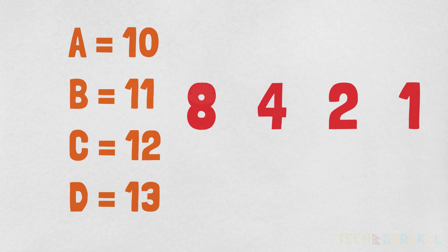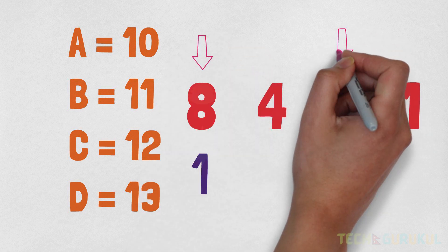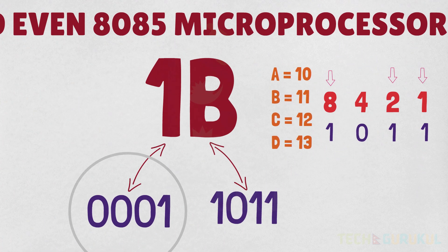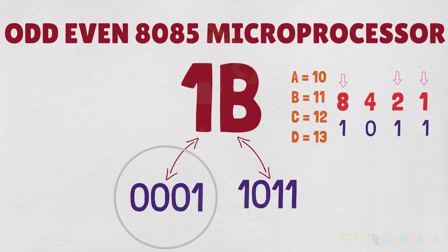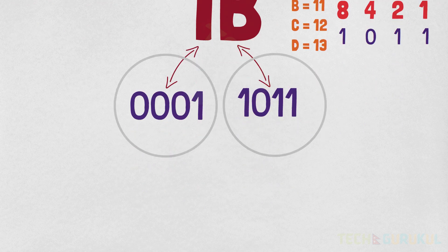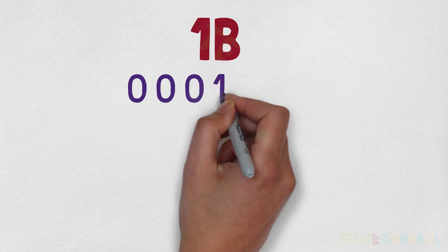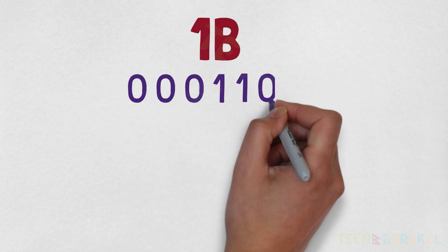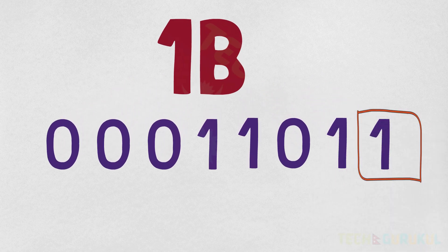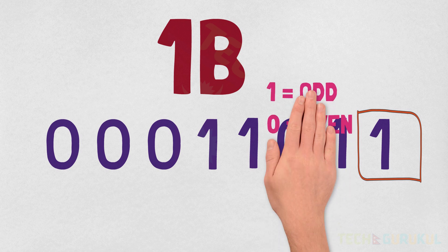Using the 8421 rule: 1 is called 0001, and B is called 1011. So 1B in binary is 0001 1011. Now the last digit — if it is 1, it is called an odd number, and if it is 0, it is called an even number.